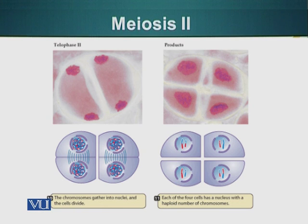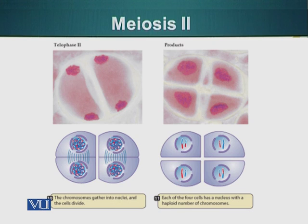Additionally, in meiosis I, the pairing of homologous chromosomes is random. For example, if we have ten pairs of chromosomes — ten chromosomes coming from the father and ten from the mother — paternal chromosome 1 can go with either the maternal or paternal chromosome 2. This is all independent and is referred to as independent assortment.